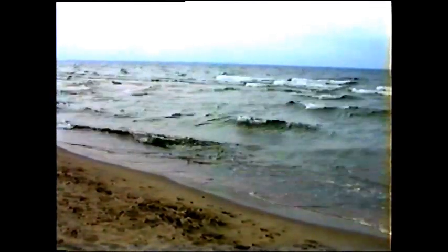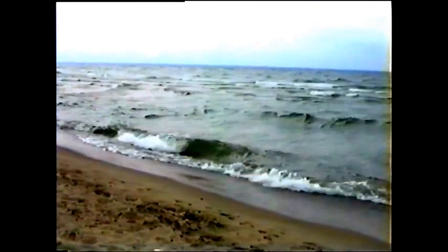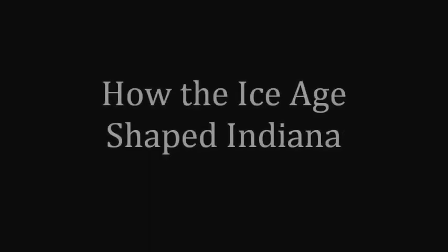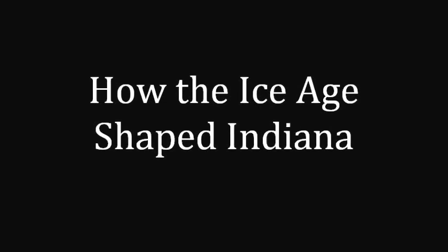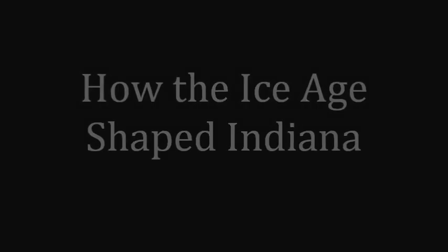Third largest of the Great Lakes and sixth largest lake on earth. What is the story behind this lake that makes up the northwest border of Indiana? Its history, as well as the topographic history of the state, started with the end of the last Great Ice Age. This is Lake Michigan.